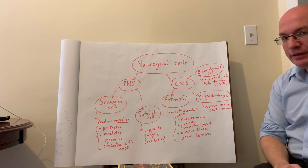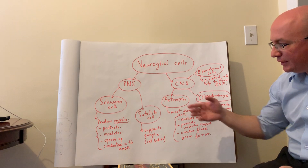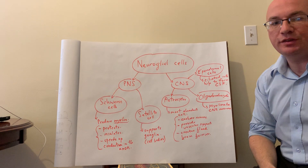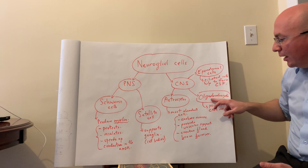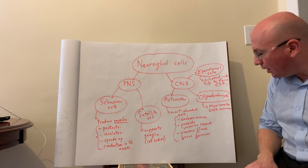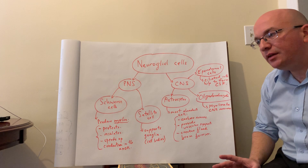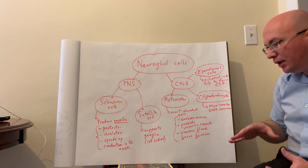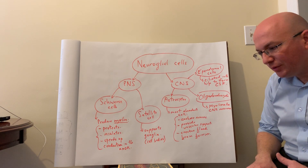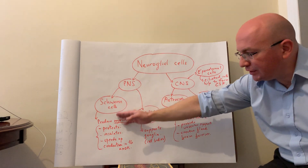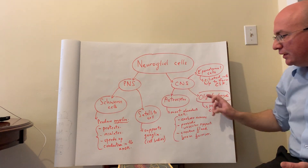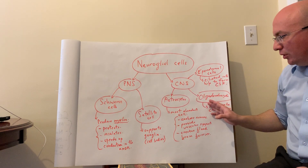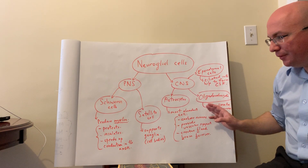Another important CNS support cell is the oligodendrocyte, which is analogous to the Schwann cell but located in the central nervous system. It wraps around axons in the brain to myelinate them, speeding up conduction and insulating the cells — the same function as peripheral myelin. The only difference is the name: Schwann cells are in the periphery, oligodendrocytes are in the central nervous system.